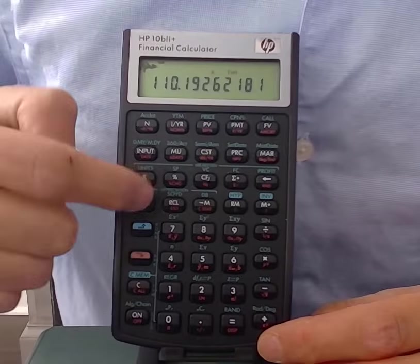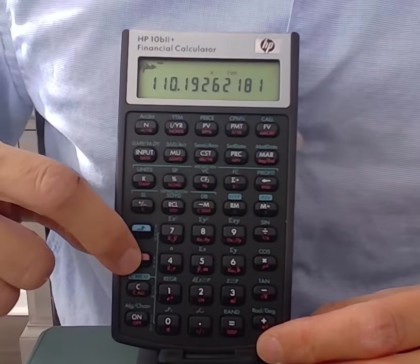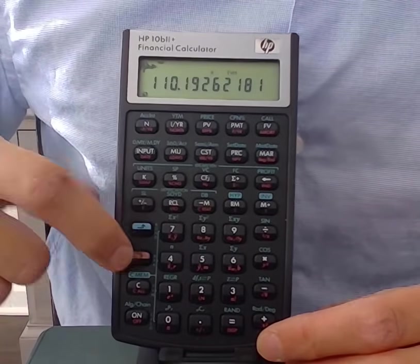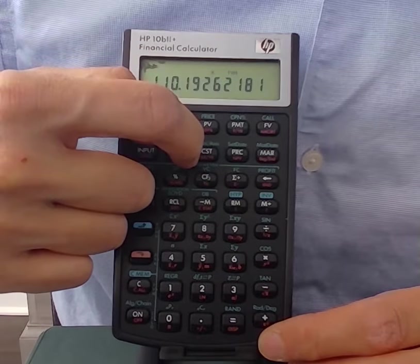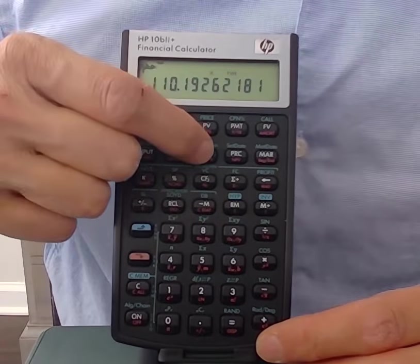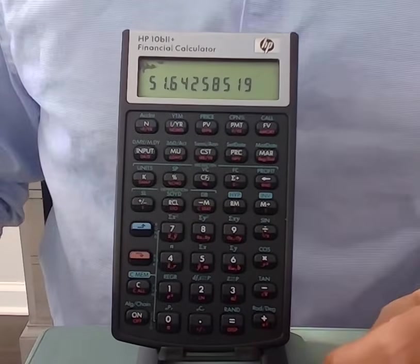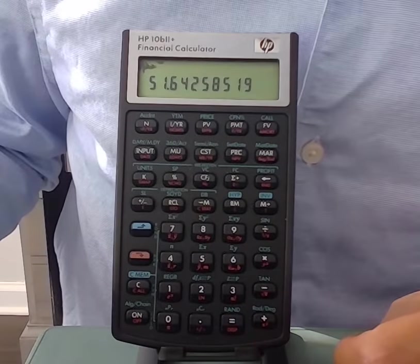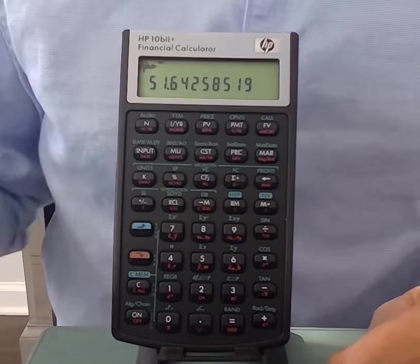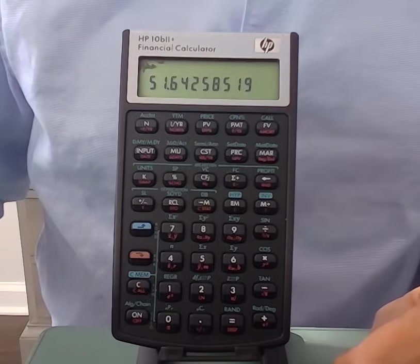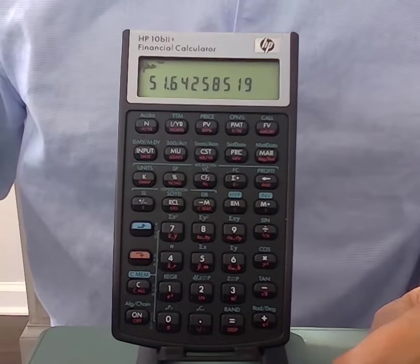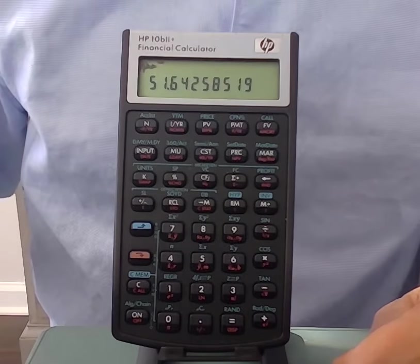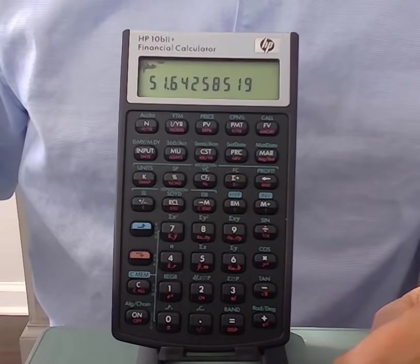So to calculate the IRR, we're going to press the shift button again, the red orange shift button, and then we go to the left of NPV. We see in red orange it says IRR slash YR for internal rate of return. And we see that the internal rate of return of these four cash flows, and if you had not already entered the cash flows to get the NPV first, you would follow the steps of entering the cash flows again and then solve for IRR.